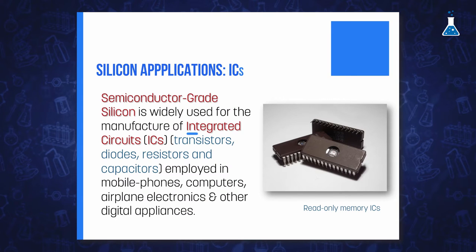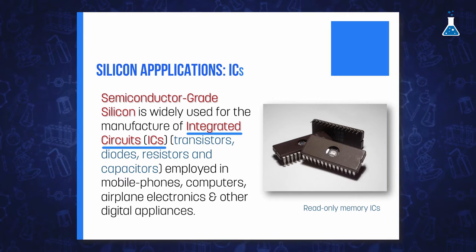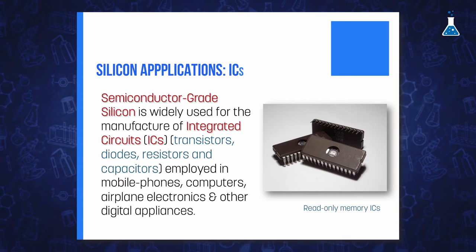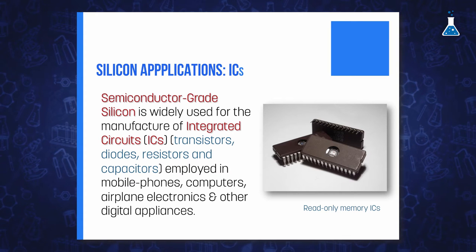On the basis of these characteristics, silicon is widely used for the manufacture of integrated circuits by a sophisticated complex plating and etching technique. ICs are employed in mobile phones, computers, airplane electronics, and other digital appliances. For this purpose, silicon must be extremely pure as well as monocrystalline — the well-known high-purity semiconductor grade or IC-grade silicon, whose methods of production were described in the previous section.